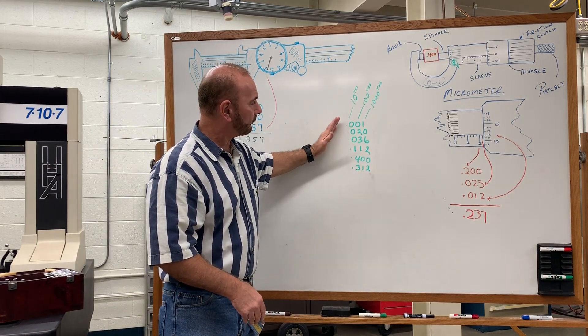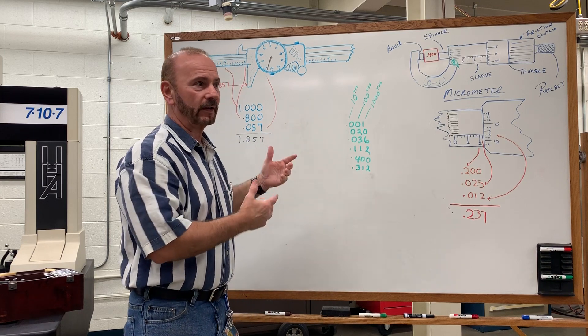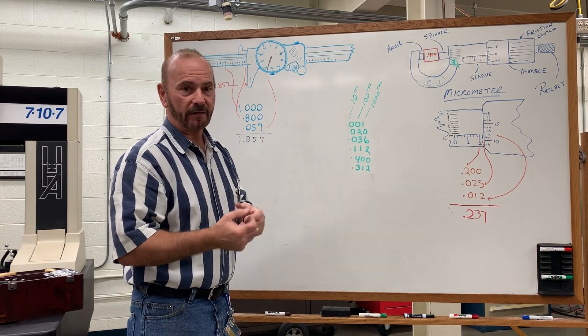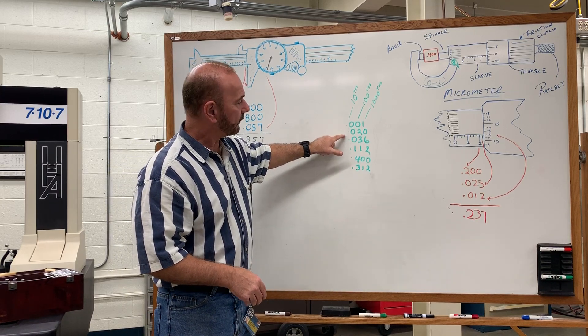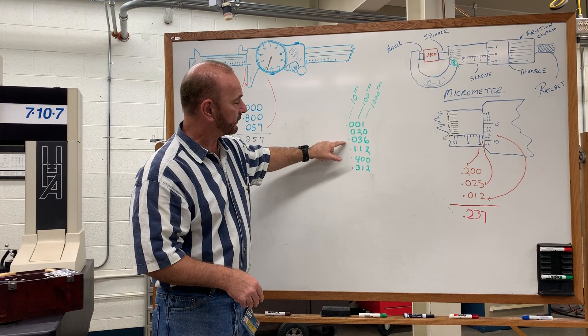So in order to understand when we're saying things like five thousandths, ten thousandths, twenty-five thousandths, it's written like this. This is one thousandths of an inch, twenty thousandths of an inch, thirty-six thousandths of an inch.